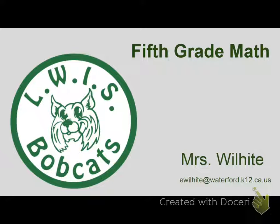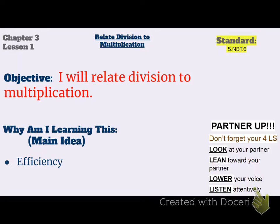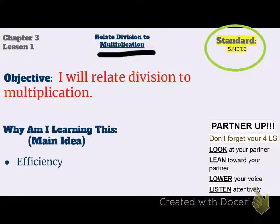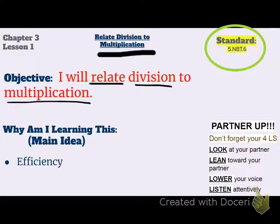Hello, Bobcats. This is Mrs. Wilhite, 5th grade math. We're actually going to be starting Chapter 3 today — we are in Lesson 1. We're going to start with Relating Division to Multiplication. It is a 5th grade standard, something you're required to know. I'm hoping at the end of today's lesson that you'll be able to relate division to multiplication. Remember, relate means what they share or something they have in common, so I'm hoping you'll see some commonalities between division and multiplication.